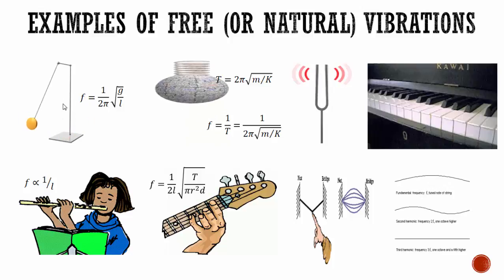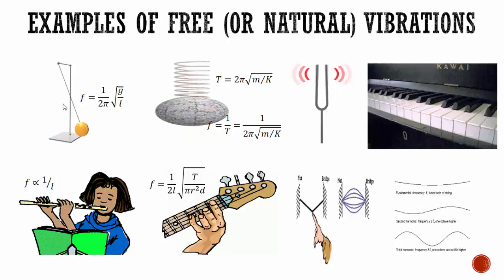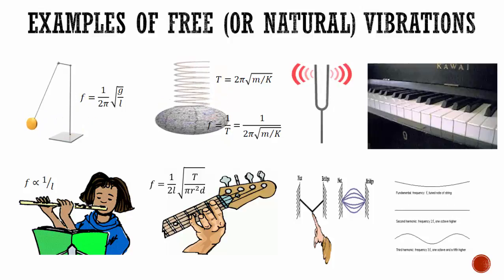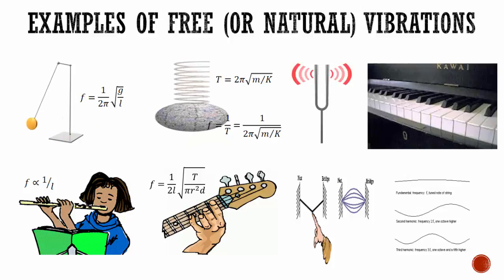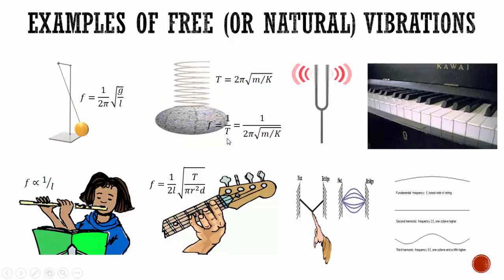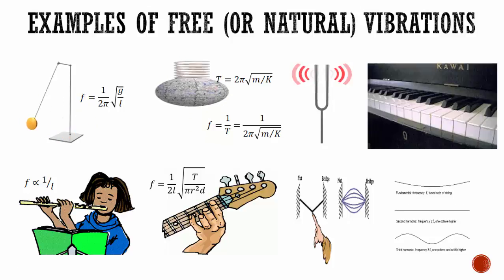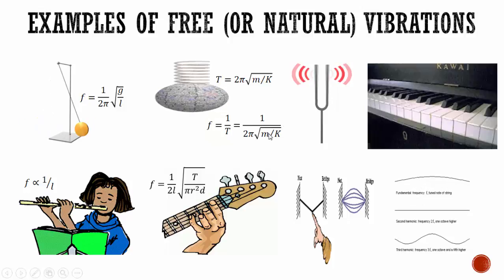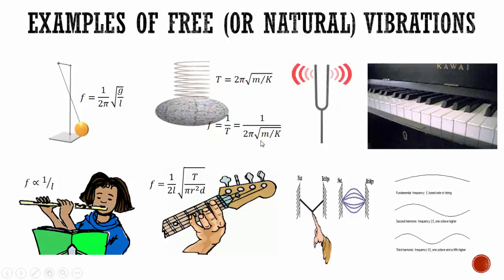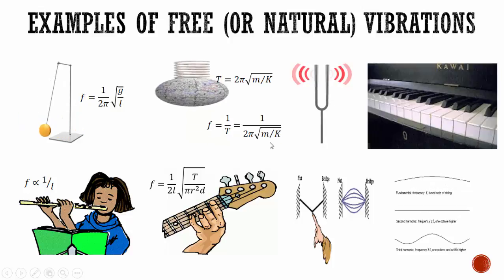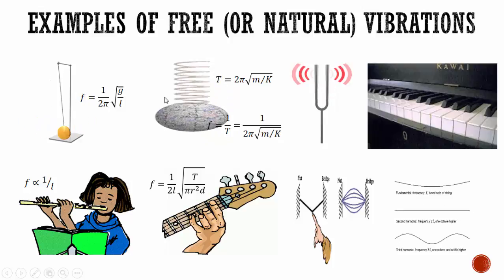If a load is suspended from a spring, when stretched and then released, it starts vibrating with its natural frequency. In this case, natural frequency is f = 1/T, and more specifically f = (1/2π) √(k/m), where m is the mass and k is the spring constant. Frequency depends upon the mass of the object suspended.